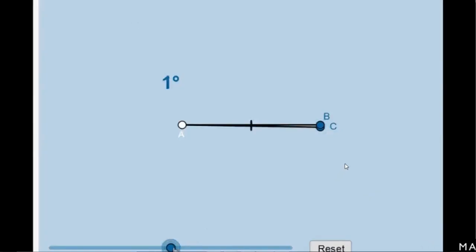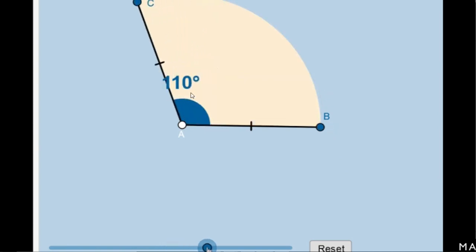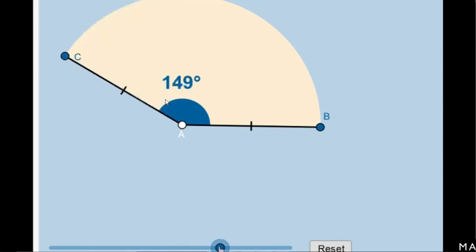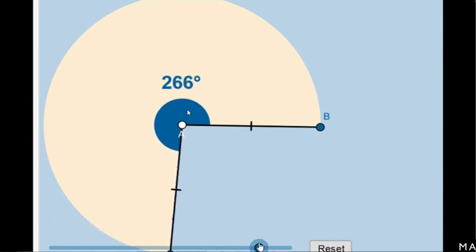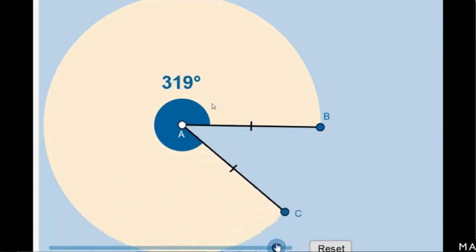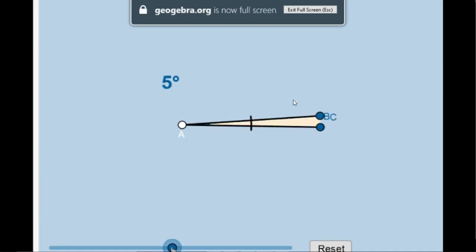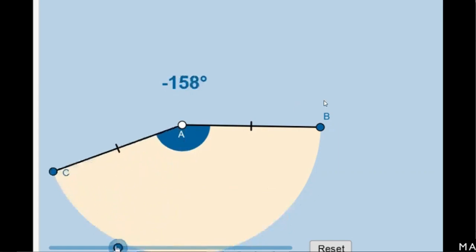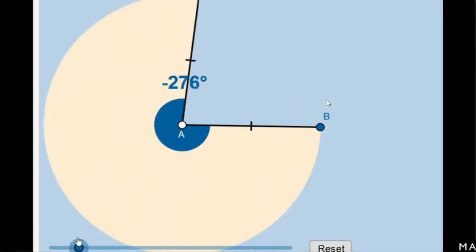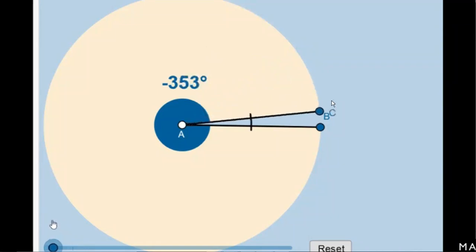Now if you take a line segment and rotate it, when you complete one full rotation the angle generated is 360 degrees. If you rotate in the clockwise direction, the angle is decreasing, and when you complete one full rotation it will be minus 360 degrees.